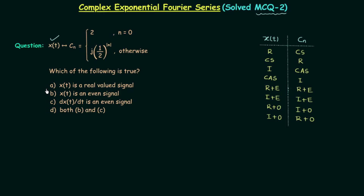Option A says XT is a real valued signal. Option B says XT is an even signal. Option C says DXT by DT is an even signal — so we are talking about the first derivative of XT in option C. And option D says both B and C.